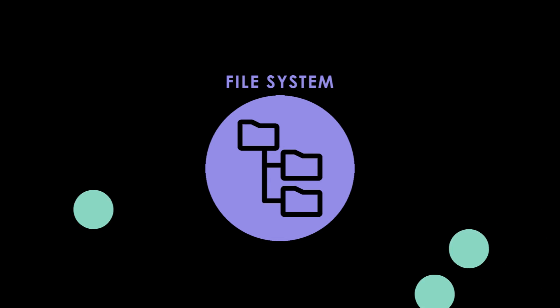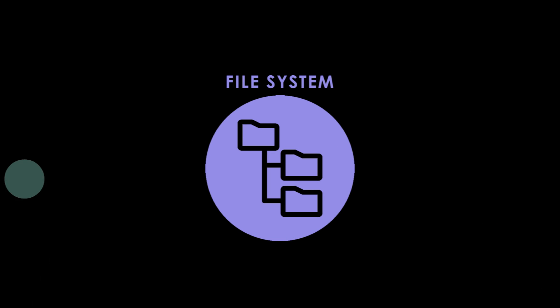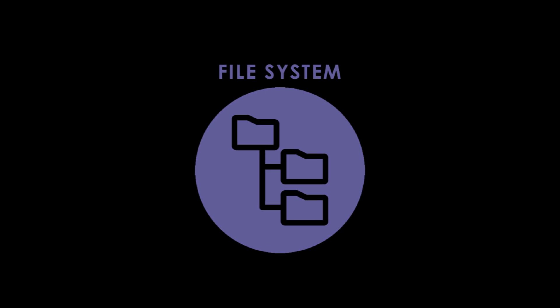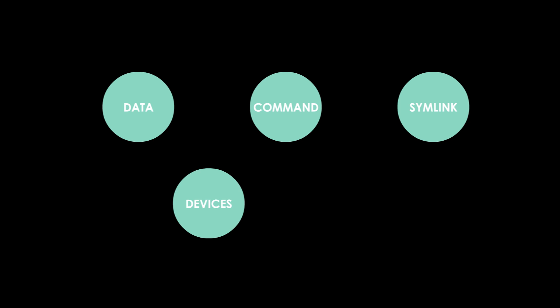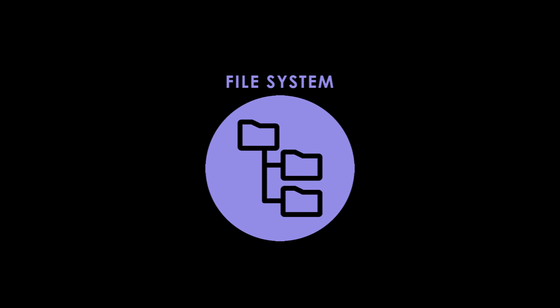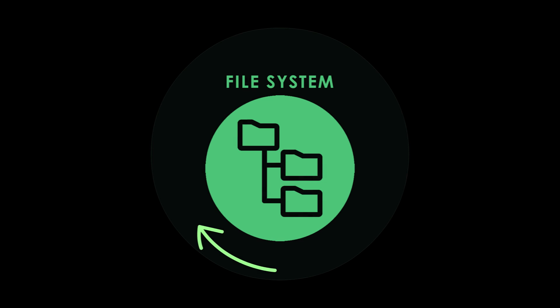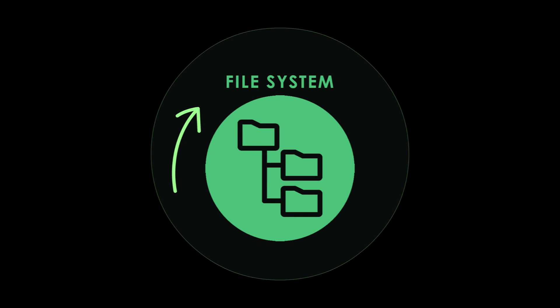The file system is the structure in which all the information on your computer is stored. Nearly everything that has an identity on your system — data, commands, symbolic links, devices and directories — are represented as items on the file system. It is paramount that you know how to get around the file system as a Linux user.